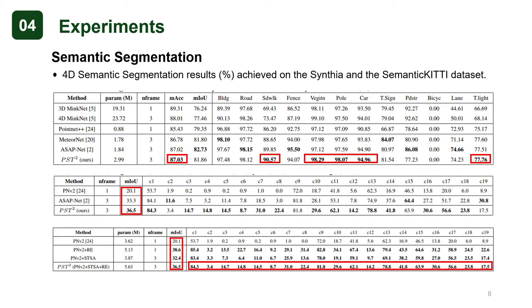We evaluate our PST² model on the Synthia and SemanticKITTI datasets for 4D semantic segmentation. We can see that our PST² outperforms these existing networks and establishes new state-of-the-art results. We also provide ablation analysis on two spatial-temporal correlation strategies and justify their contributions.